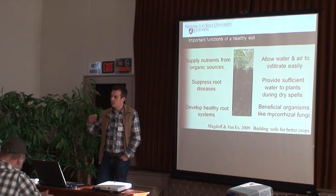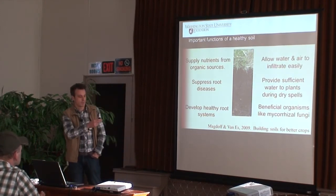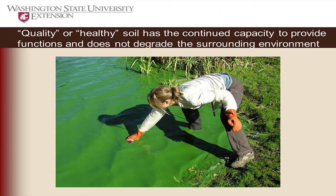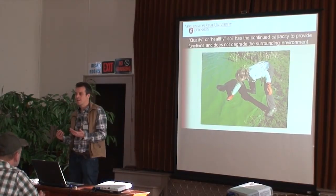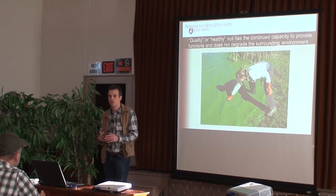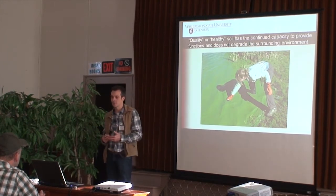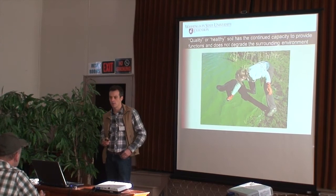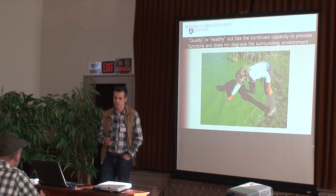Usually in agriculture, the function of soil we're thinking about is good production of crops. Crops require all of these different things in order to produce well. Another part of that definition of quality soil is that it provides the functions we want without degrading the surrounding environment. You can have a very fertile, very productive soil, but if that soil is also losing nutrients to the environment — degrading waterways, groundwater, and air quality — then it's not a very quality soil.